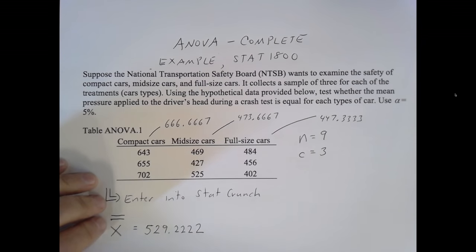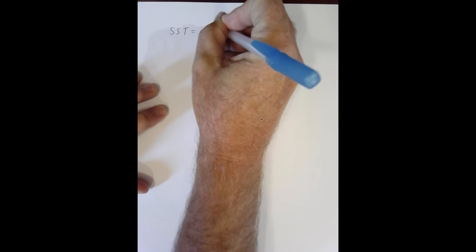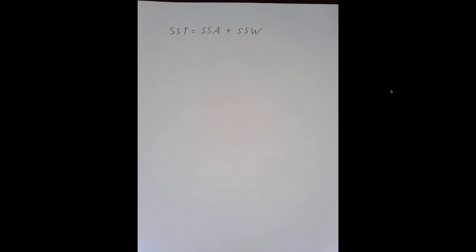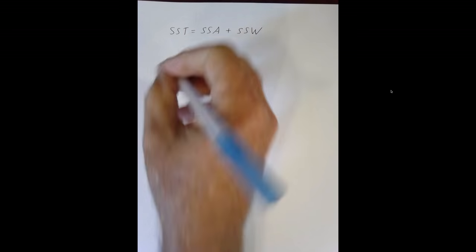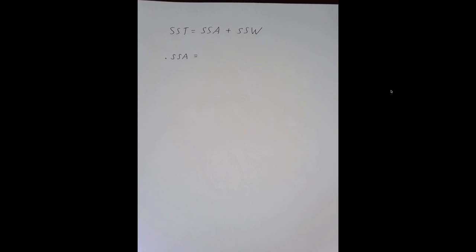Let the process play its way out. Now, remember, the sum of squares total is the sum of squares among the groups plus sum of squares within the groups. So if I know two of these, I can find the other one. But it's typically customary to just calculate the sum of squares among and the sum of squares within.